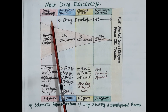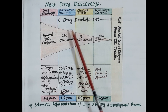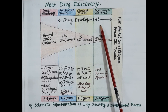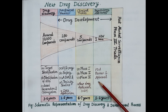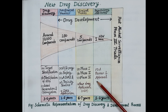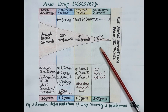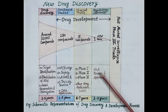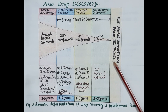Drug discovery identifies lead compounds — leads are the most potential drug candidates. Drug development further screens identified leads in animals and human beings so as to finally identify a single most safe and effective drug molecule. After receiving approval by the licensing authority, the FDA, the drug is manufactured at large scale and made available for treatment. Investigational studies continue even after FDA approval, called Phase 4 trials or post-marketing surveillance.